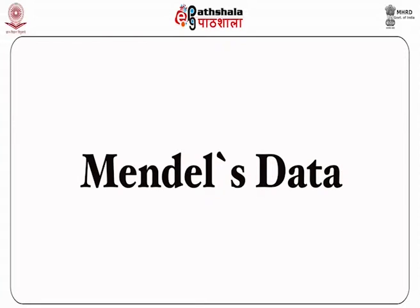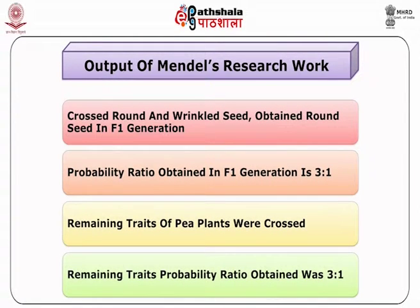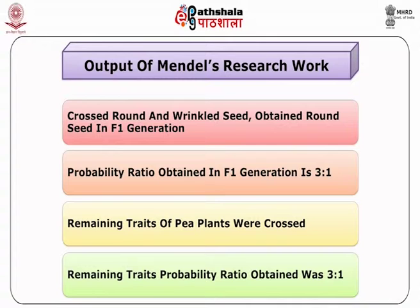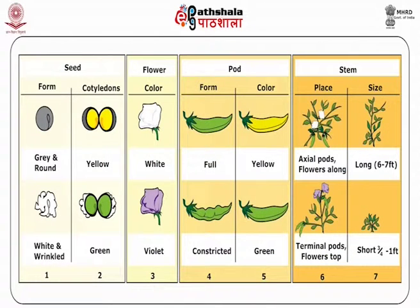Mendel's data. Mendel crossed round and wrinkled seeds. He obtained round seeds in the F1 generation, which means the round trait is dominant over the wrinkled trait. The probability ratio obtained in the F1 generation is 3 to 1 for round and wrinkled seeds. In the same manner, the remaining traits of pea plants were crossed, and one allele in each pair was dominant over the other. For all remaining six traits, the probability ratio obtained was 3 to 1.